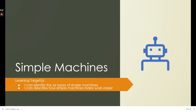Our learning targets for this video are: I can identify the six types of simple machines, and I can describe how simple machines make work easier. Remember, we learned about work previously, and we are going to talk about how that applies to these simple machines.